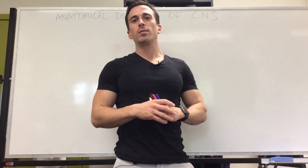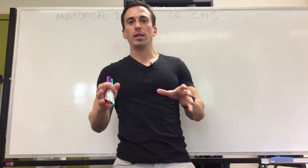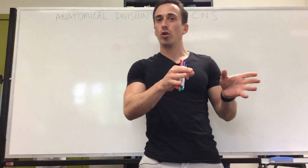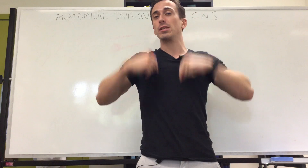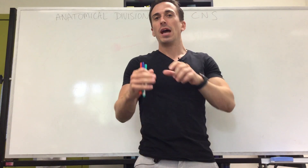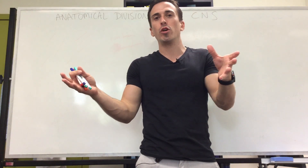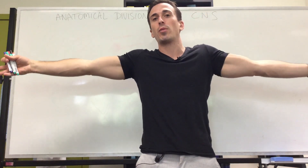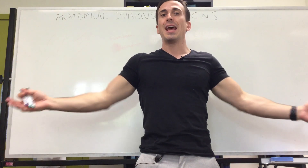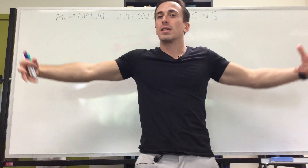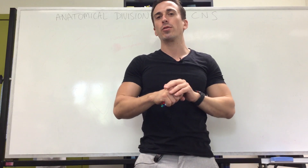The nervous system can be divided anatomically into the central nervous system — which is the brain, the brain stem, and the spinal cord — and the peripheral nervous system, which are all the nerves that come out and away from the brain and spinal cord, predominantly motor, and all the nerves that come back in to the brain and spinal cord, predominantly sensory.